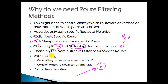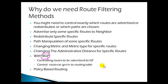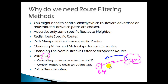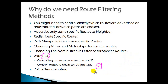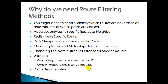Route filtering is very commonly used with BGP, especially with service provider scenarios. When running BGP between your router and a service provider, by default all routes are exchanged. You may want to deny certain routes and only learn specific routes from the ISP, or advertise only specific networks. Path manipulation is also done in BGP. Policy-based routing allows you to define what route a router has to use, and we'll cover these filtering methods in BGP in future topics.